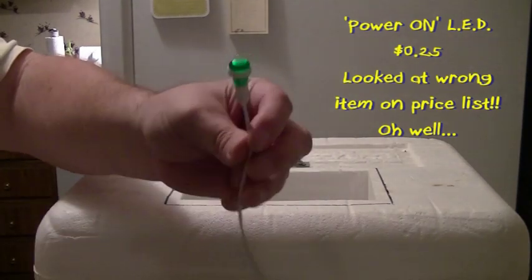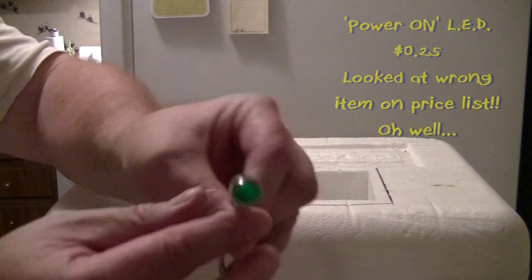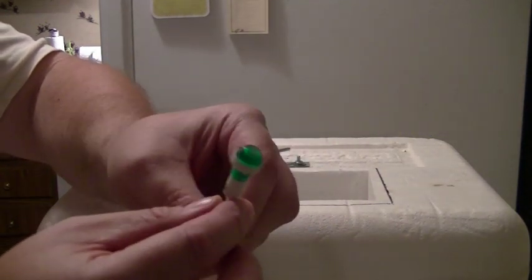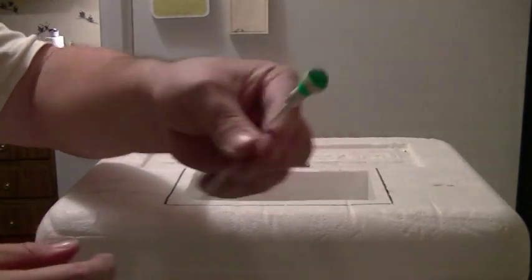They work just as good. This one is green. You can get them in all the colors of the rainbow. Just go to eBay and do a search for power-on LED or power-on light, and this is what it's going to show you out of China - all these little power-on LEDs.